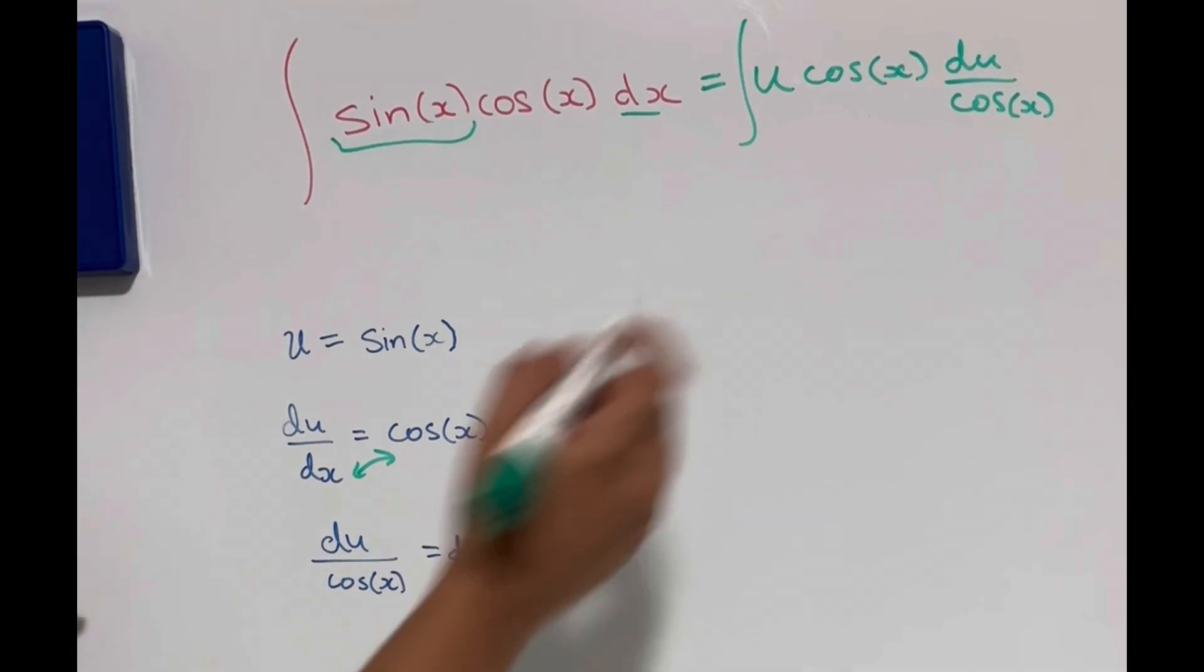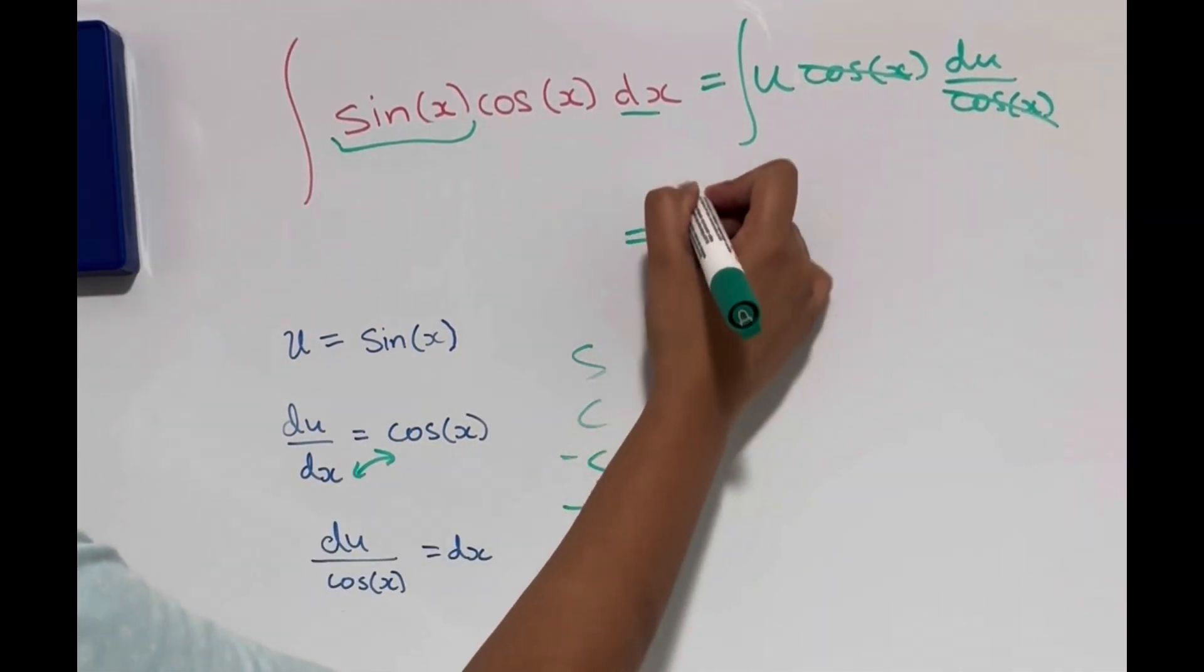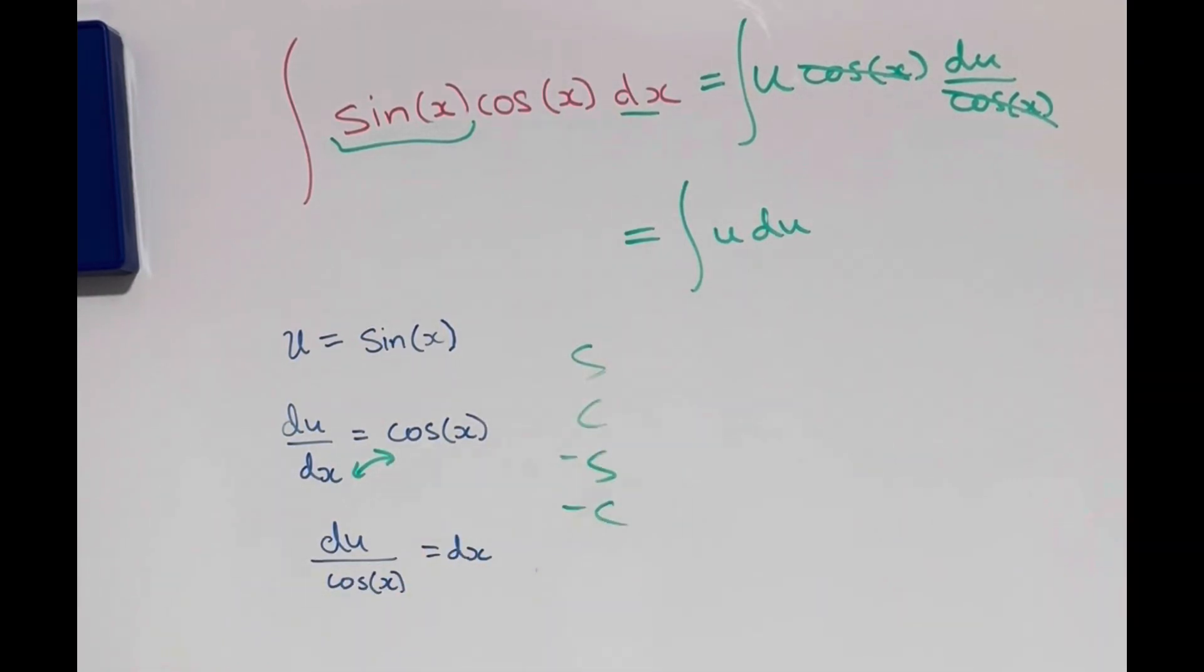Now this is good substitution because we can see that the cos x and the cos x cancel and our integral turns into u du and it's completely in terms of u now.